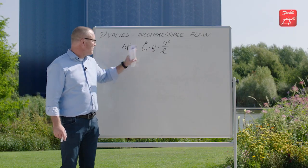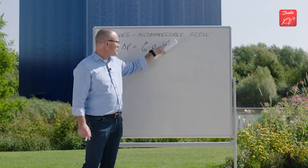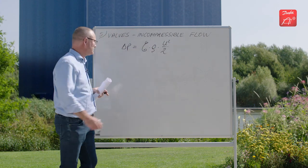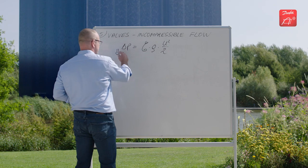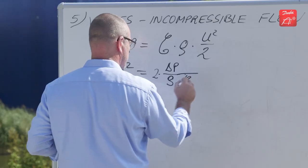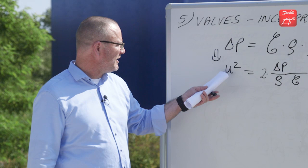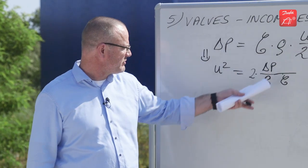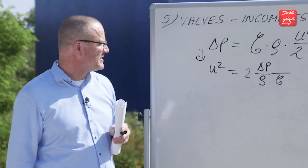Now we're going to rearrange this equation, trying to solve for the velocity. We get that the velocity equals the square root of two times pressure drop divided by density times resistance coefficient.